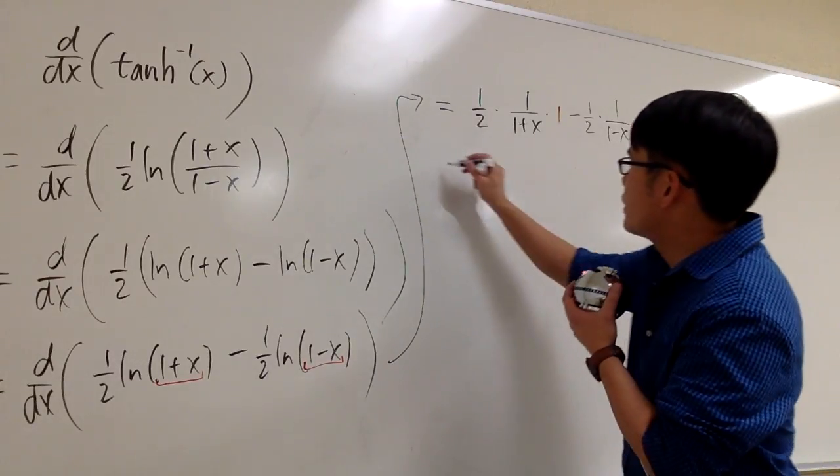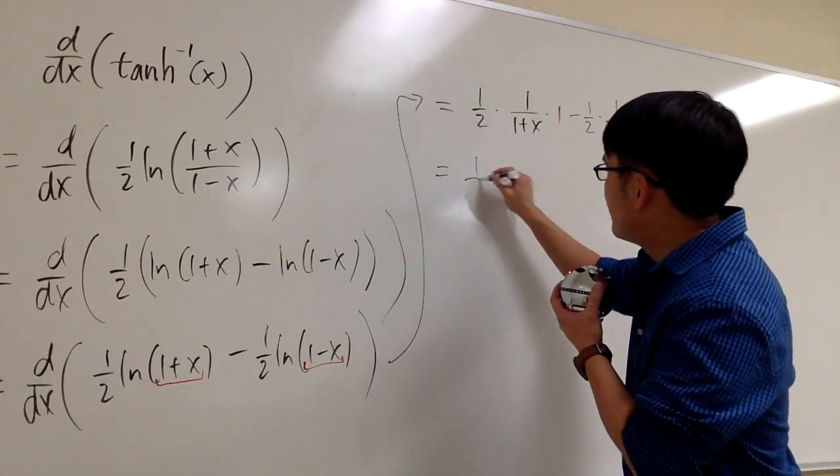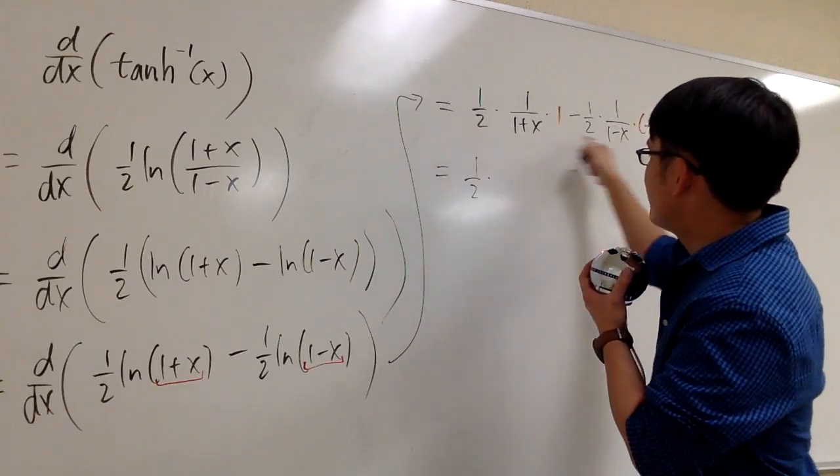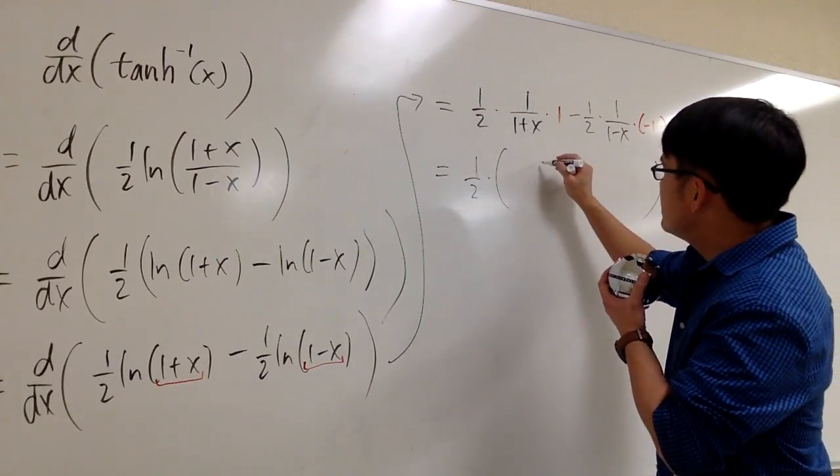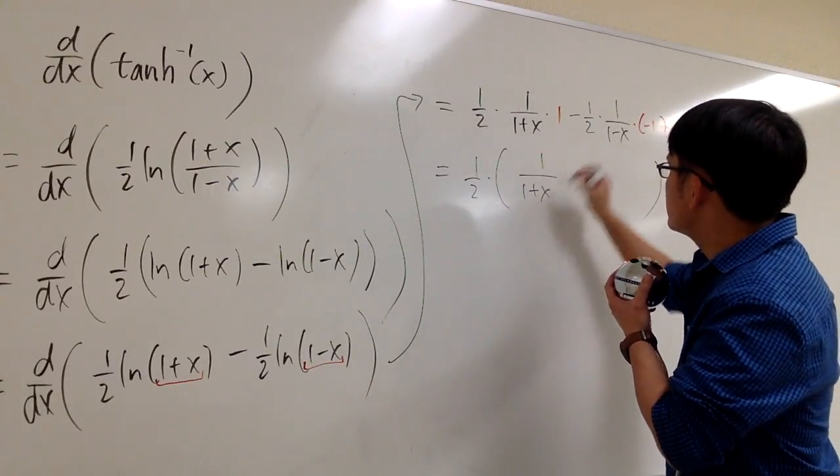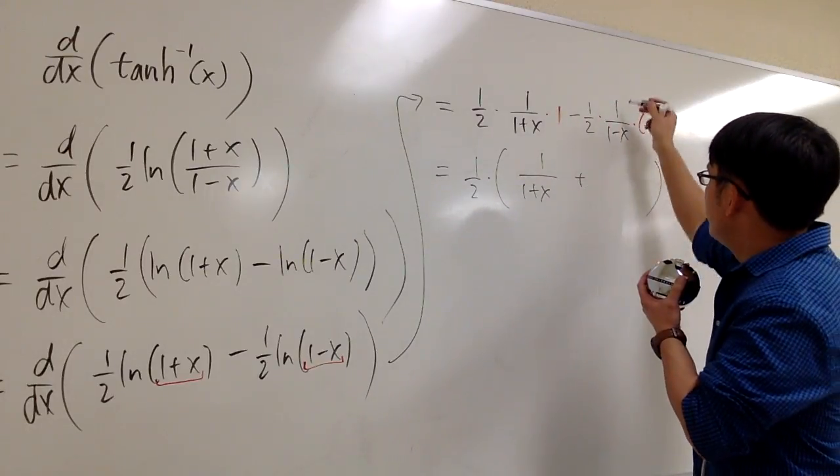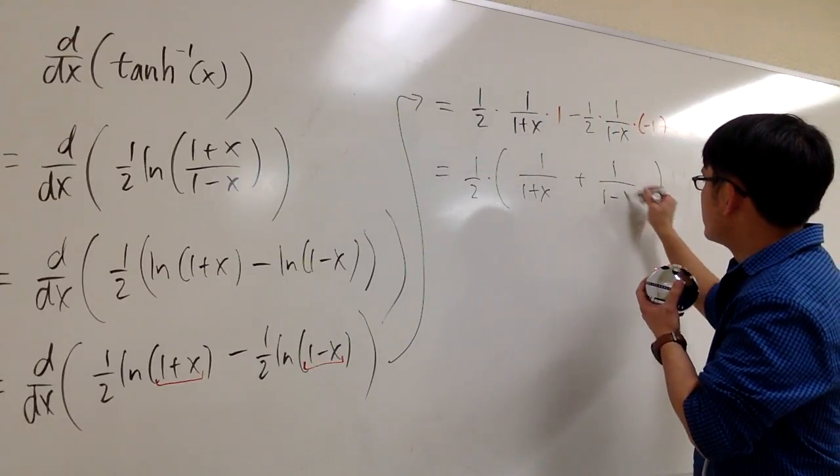And let's look at this. What can we do? This is 1 half. And because they have 1 half, let me factor out 1 half altogether. This is 1 over 1 plus x minus minus, so it becomes plus. And this is 1 over 1 minus x.